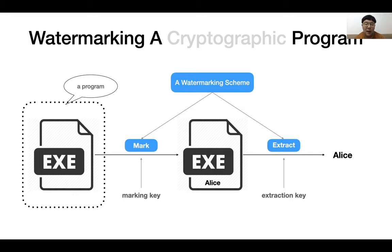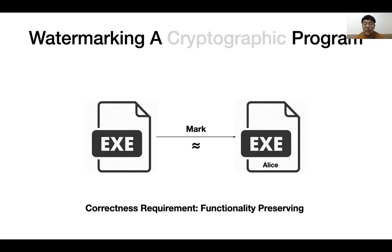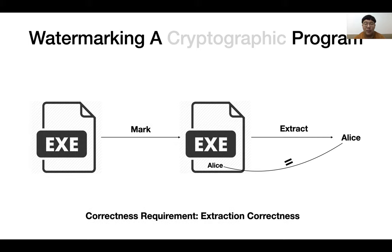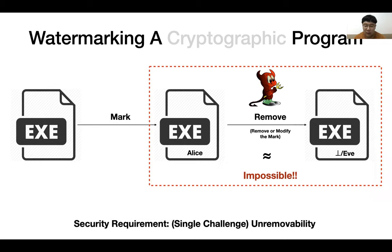The marking algorithm can embed a message into a program with a marking key, and the extraction algorithm can extract the embedded message from a watermarked program with an extraction key. Its correctness requires that the marking algorithm can roughly preserve the functionality of the watermarked program.